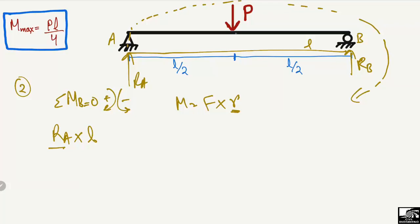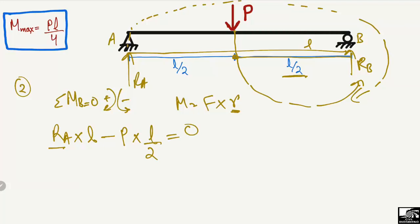Setting the summation of moments about B equal to zero: RA × L − P × (L/2) = 0. Shifting RA to the right side and solving, we get RA = P/2.